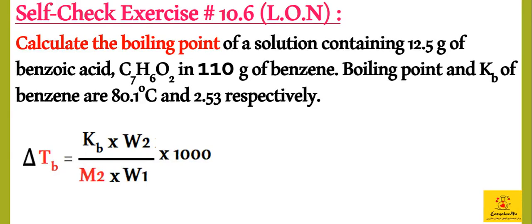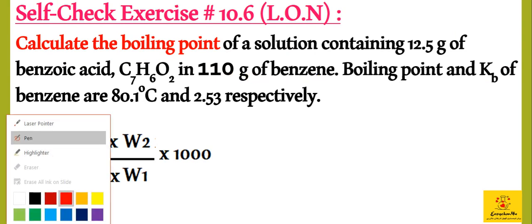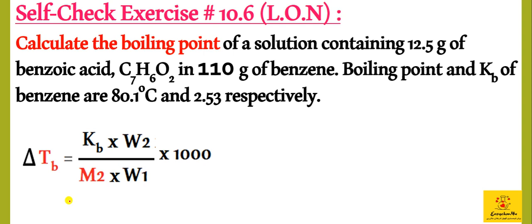Okay students, the next question is self-check exercise 10.6, a low order numerical. Calculate the boiling point of the solution containing 12.5 grams of benzoic acid in 110 grams of benzene. The boiling point and KB of benzene are given. So directly we have to use this formula. We have to find boiling point, so we calculate Del Tb first.